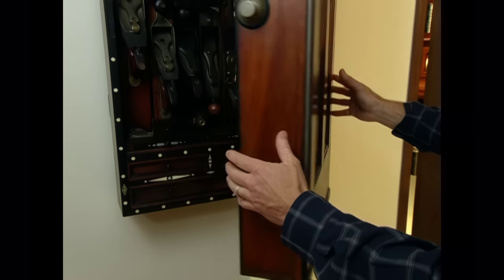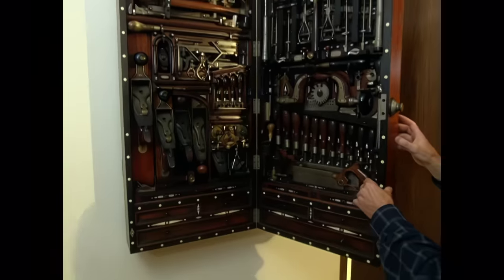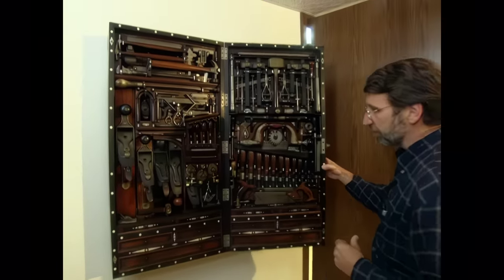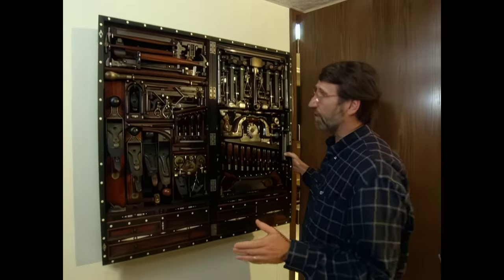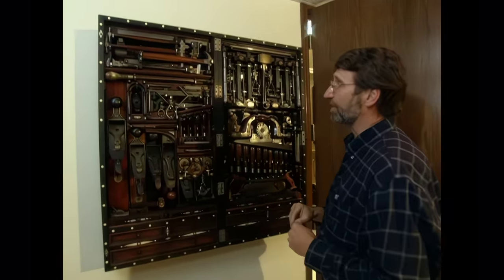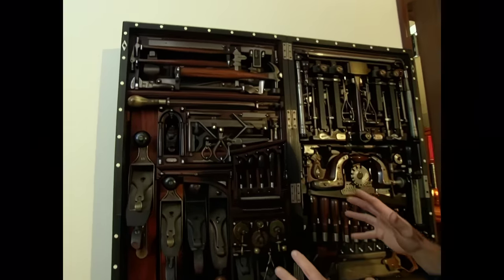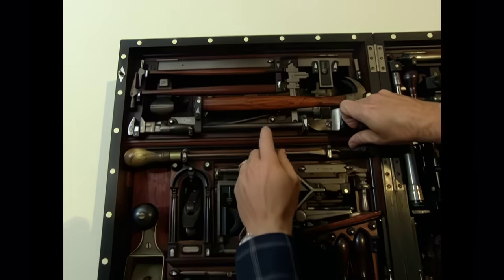Now the outside is Honduran mahogany with some ebony panels. Inside, an incredible collection of nearly 300 tools. And I'm told that this case is so heavy that it takes three strong men to lift it up onto the wall. And look at the beauty of this cabinet and these tools. And it's very clever.